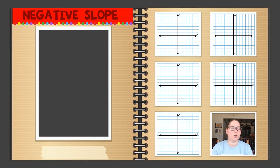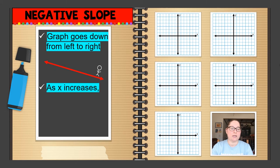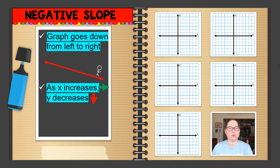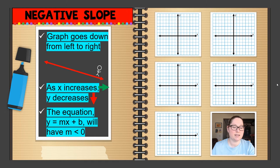Now we're looking at negative slope. With a negative slope, the graph goes down from left to right. If I draw my little guy at the left side, he's going down to reach the right side — that's a negative slope. As X increases, Y decreases. The equation y equals mx plus b will have M less than zero, giving a negative value for the slope. A common term with negative slope is downhill — your graph is going downhill.